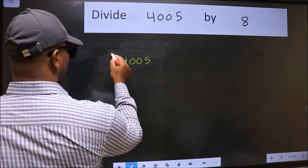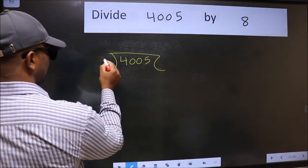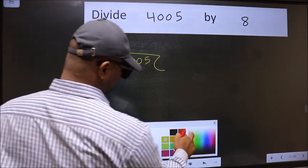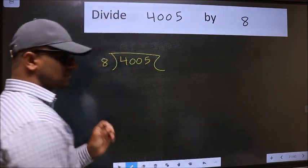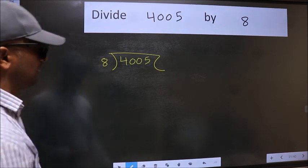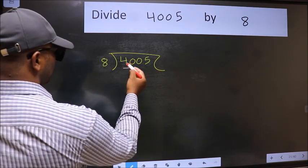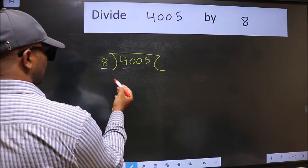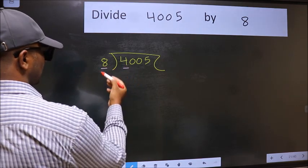4005 and 8 here. This is your step 1. Next, here we have 4 and here 8. 4 is smaller than 8.